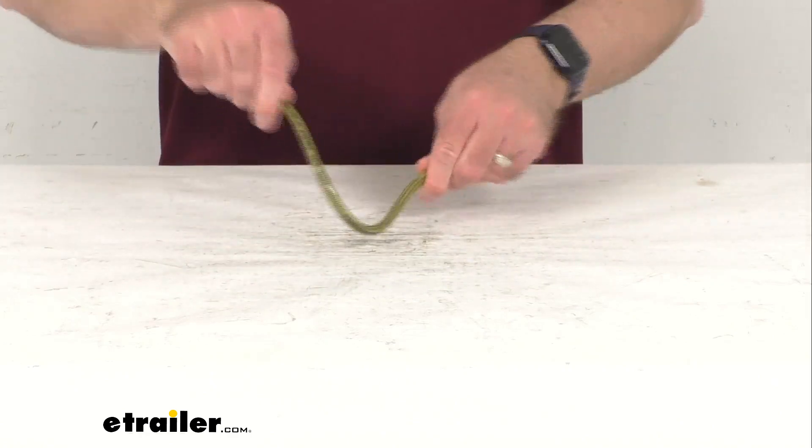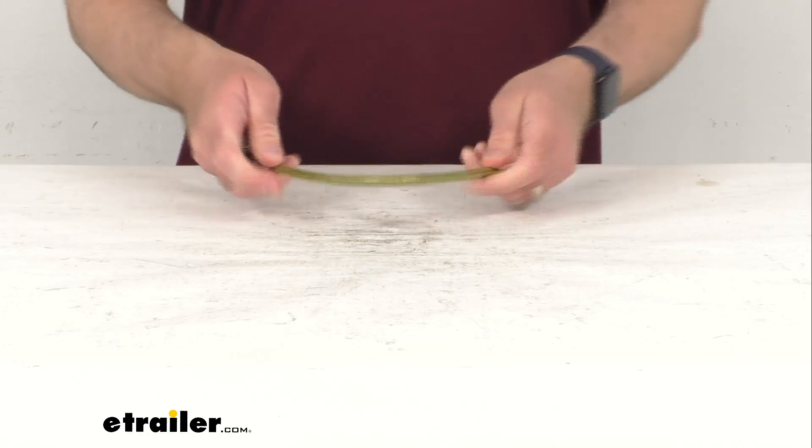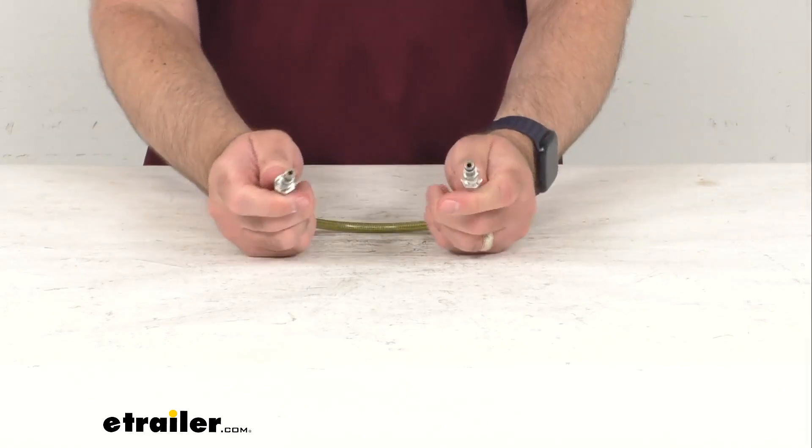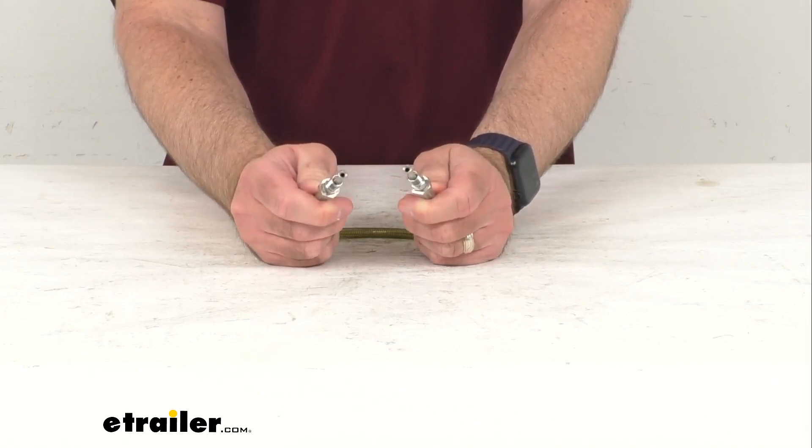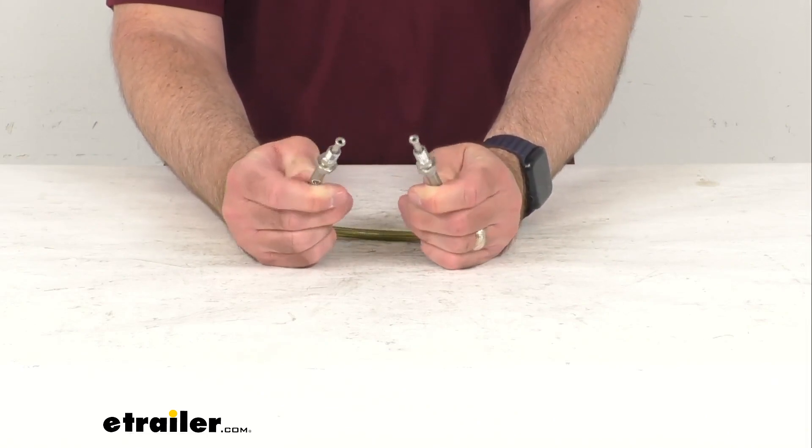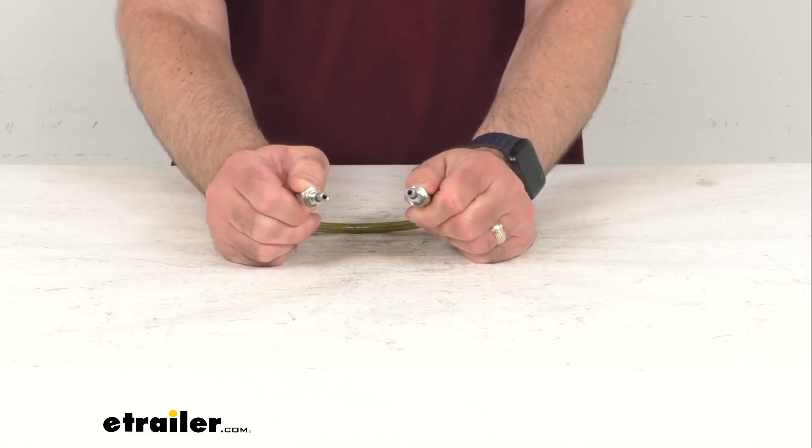This flexible braided brake line acts as part of your trailer's hydraulic braking system. It connects your hydraulic brake actuator to your trailer brakes when used with additional lines, tees, and fittings, which are sold separately.